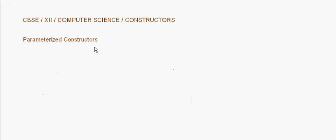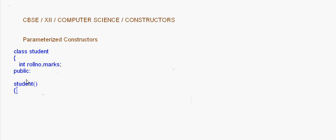Let's take the topic of parameterized constructors from the lesson on constructors and destructors. Suppose I have a class called student with int roll number and marks. We make a constructor here where roll number is equal to 10 and marks is equal to 90. This constructor is not taking any parameters.